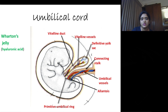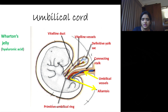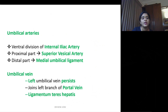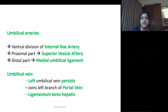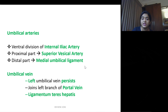The main contents of the umbilical cord are the umbilical vessels, allantois, and vitelline duct. The umbilical arteries are derived from the ventral division of the internal iliac artery. Once the function is over, the proximal part of the umbilical artery is seen as the superior vesical artery, and the distal part degenerates forming the medial umbilical ligament.